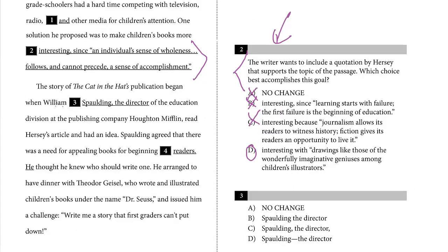Let's take a look at question three. 'The story of the Cat in the Hat's publication began when William Spalding, the director of the education division at publishing company Houghton Mifflin, read Hersey's article and had an idea.' You should recognize this as a nonessential clause — extra information that can be bound by two commas, two em dashes, or parentheses. If you cross it out, the sentence still makes sense. We have one comma but need another. The correct choice keeps both commas — no change. The answer is A. Note: if you use an em dash as in option D, you must be consistent with both punctuation marks.